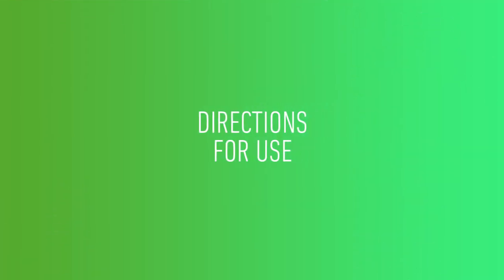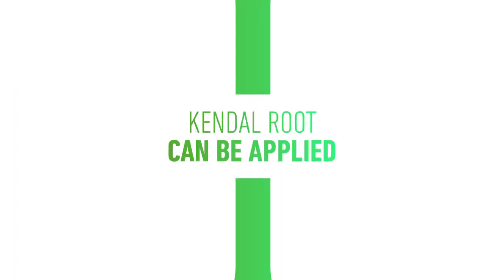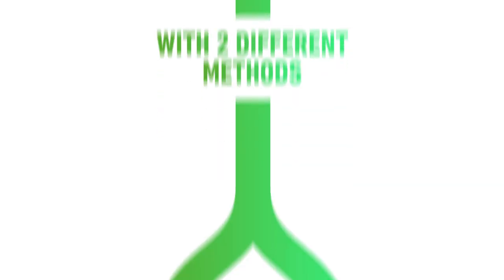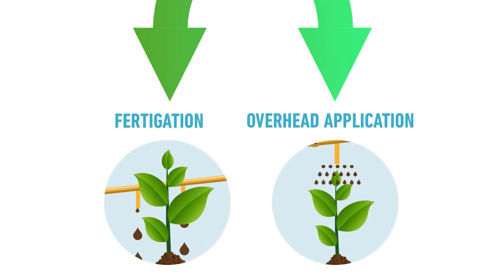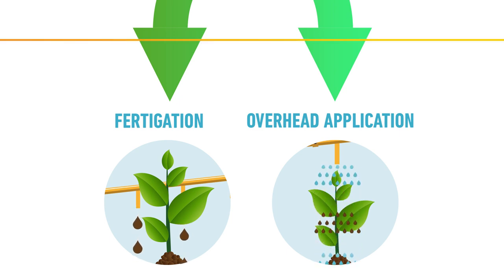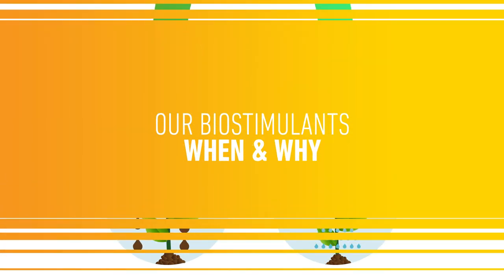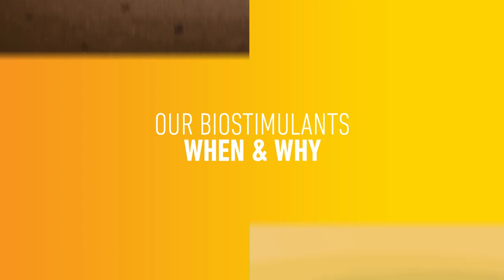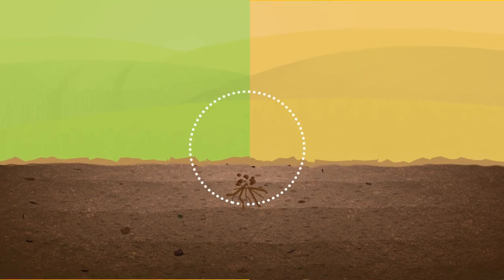Directions for use. Kendal Root can be applied with two different methods: fertirigation and overhead application. Let's now get to know the specific details of each soil biostimulant, discovering when and why they should be applied.